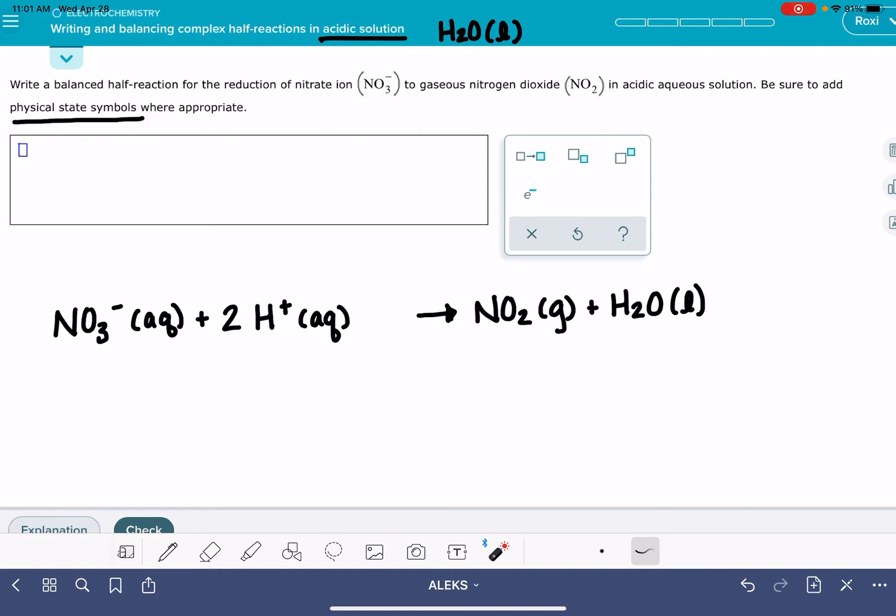The last thing that we have to do is charge balance this equation. So to balance the charges, we need to figure out the total charge on the left-hand side. Over here, we have a minus one plus two that's adding up all of those charges, and that adds up to a plus one charge. And then over here on the right-hand side, we have no charges at all. That's neutral. We want to find the side that has the highest charge. That's the plus one right here.